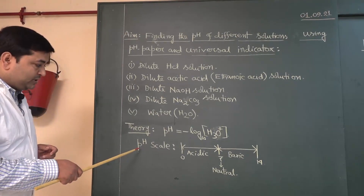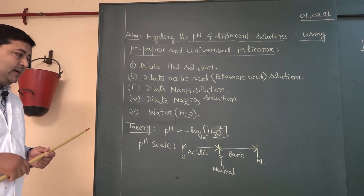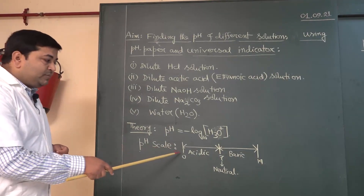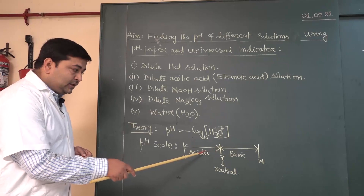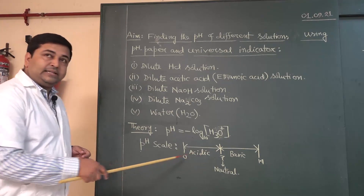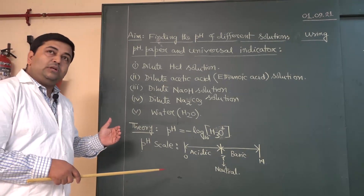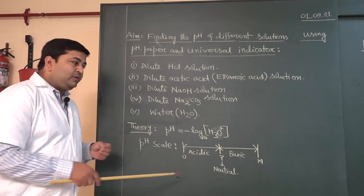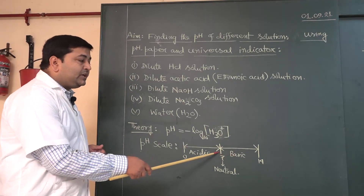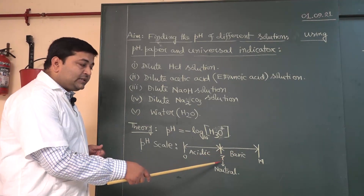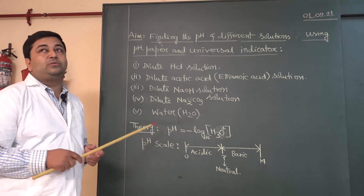On the pH scale, if the pH value is from 0 to less than 7 then the solutions are acidic. If the pH value is more than 7 to 14 then they are basic, and if the pH value is 7 then the solution is neutral.